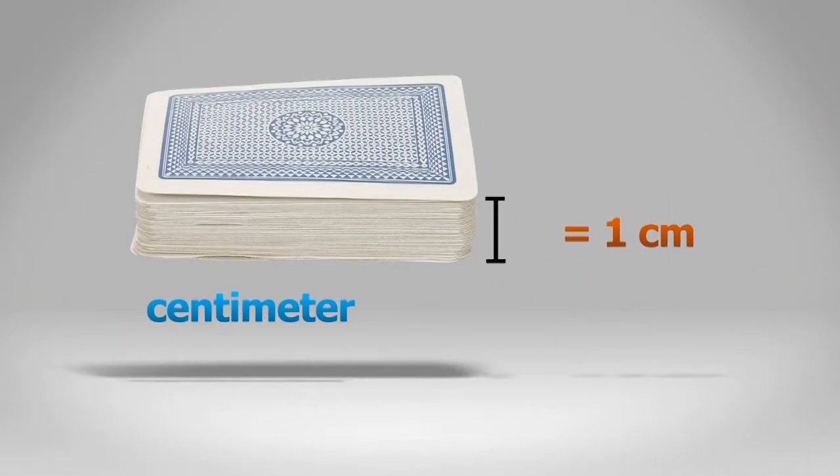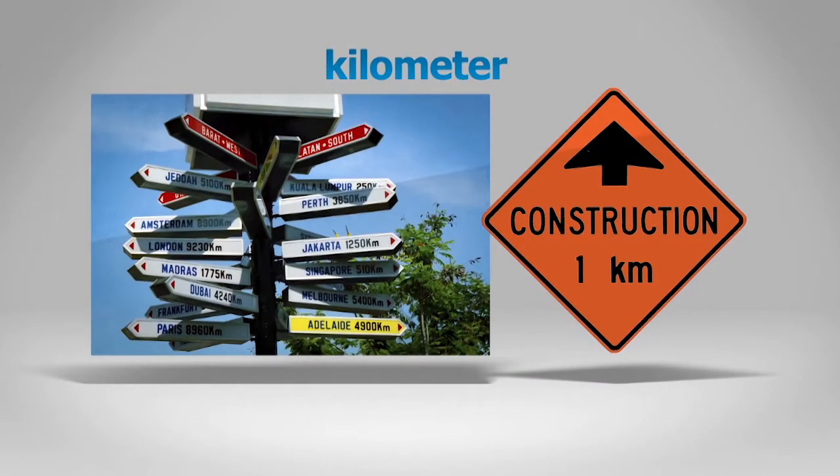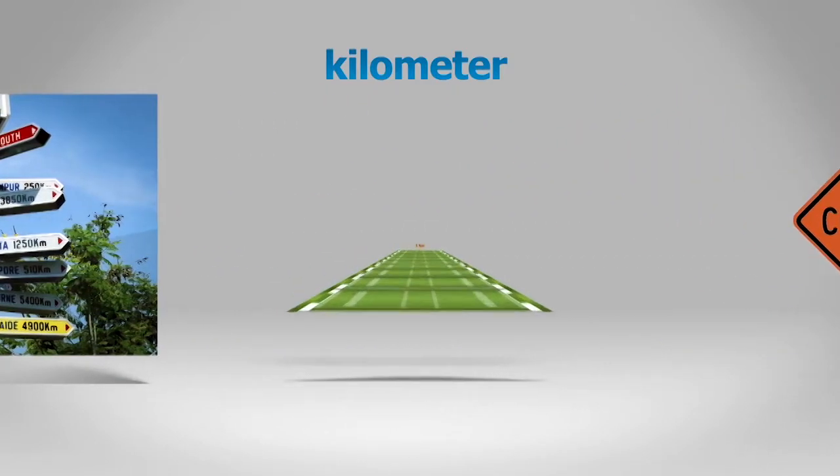One centimeter is about the size of the thickness of a deck of cards. One meter is approximately the height of a table. The kilometer measures much larger lengths. Kilometers measure distance traveled.